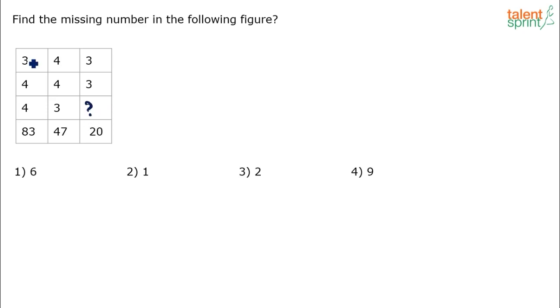If you look at the numbers here, we have got three, four, four, eighty three. I mean column wise, right? Three, four, four, eighty three. Four, four, three, forty seven. Three, three, the missing number, twenty. The first thing that you should try and understand is are the operations being done column wise or row wise? Some operation is being done. It's all based on some arithmetic operation between these values that results in finding out the missing number.